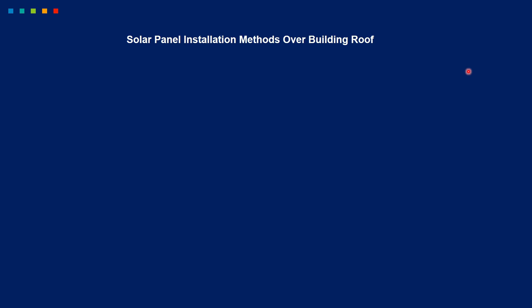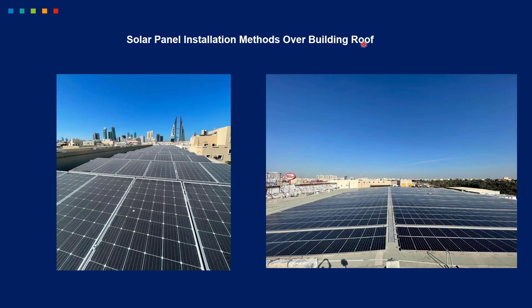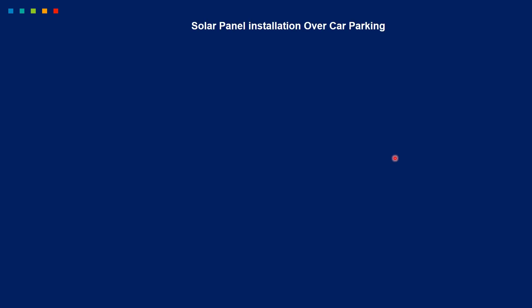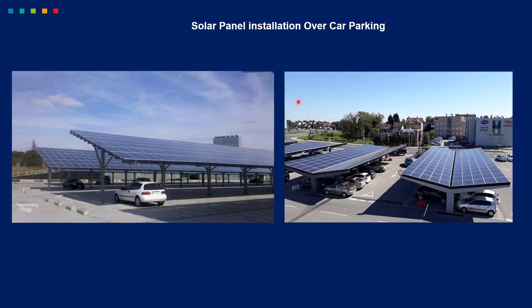Let's see the different solar panel installation methods used in Bahrain. For installation over the roof, we are using this kind of design — the solar panel has been installed over the roof and it is tilted towards the true south. Let's also look at some solar panel installations over car parking, showing different methods which we can use to cover car parking areas with solar panels.